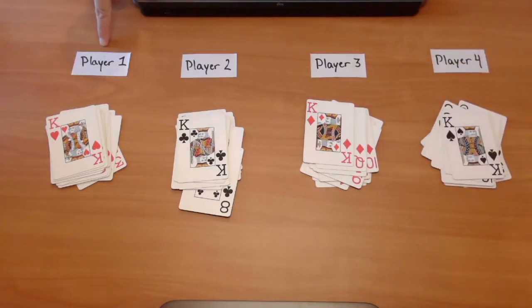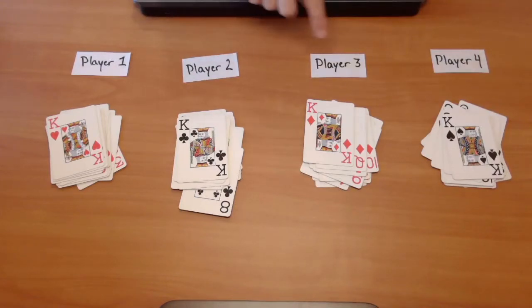Player 1 represents bank 1. Player 2 represents bank 2. 3 and 4, respectively, the same.